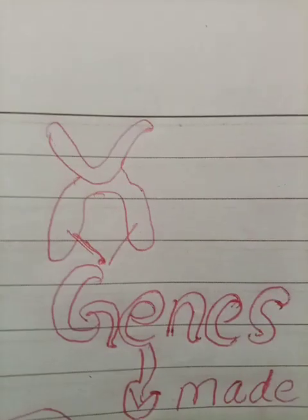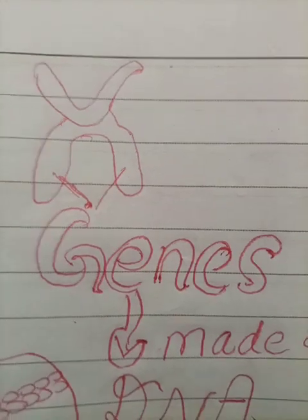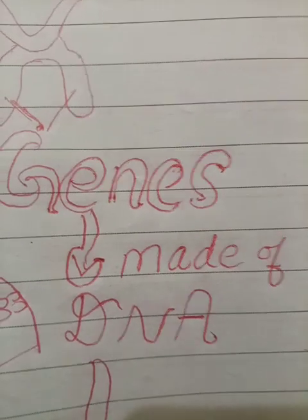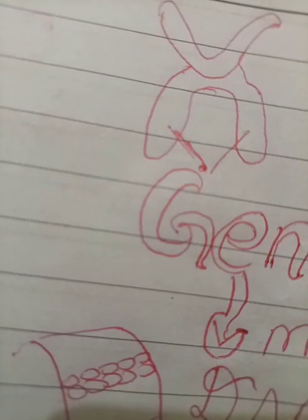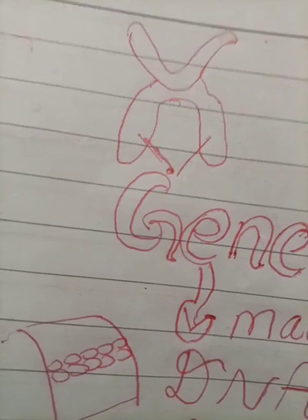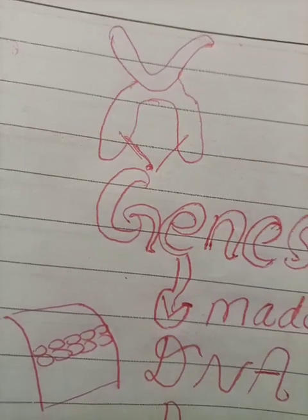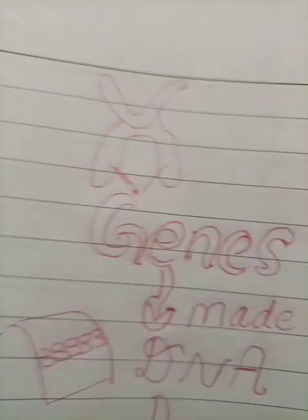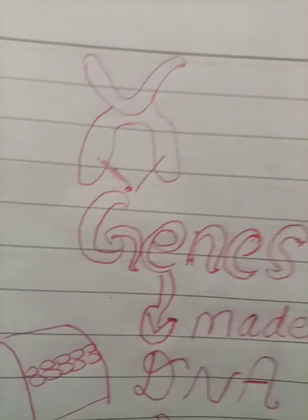Now, what are these genes made up of? If we get a closer look, genes are made up of DNA. Chromosomes have genes, and genes are made up of segments of DNA — specifically, segments of DNA that have the ability to make a protein or be expressed.